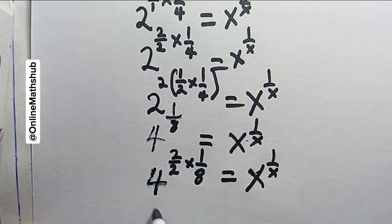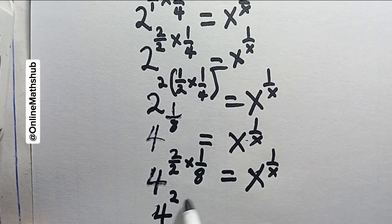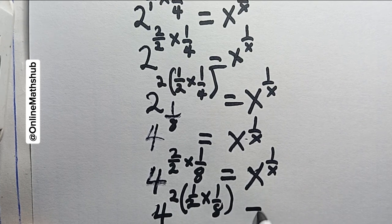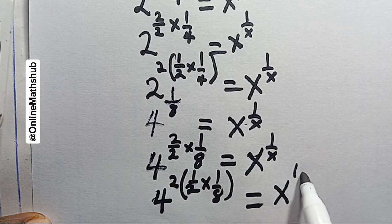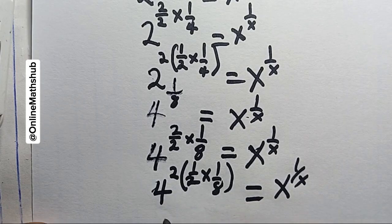If I factor these two out, I'm going to be having 4 power 2 into 1 over 2, multiply by 1 over 8, and this will be equal to x power 1 over x.